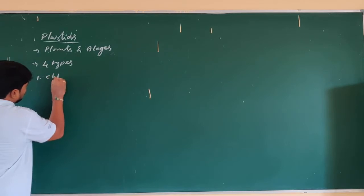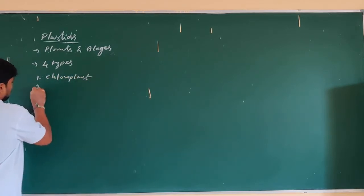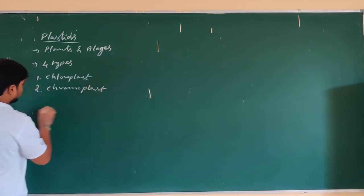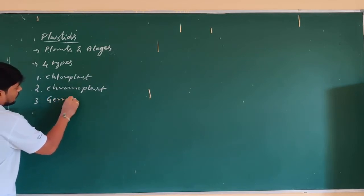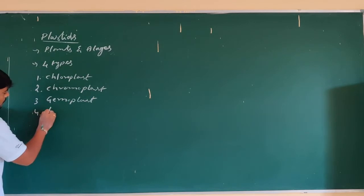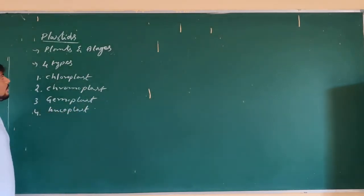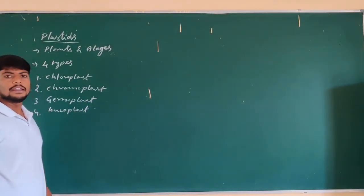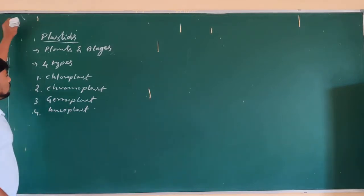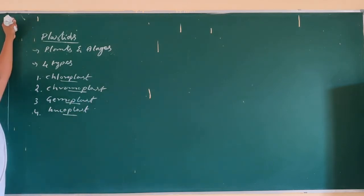The four types of plastids are: number one, chloroplast; number two, chromoplast; number three, gerontoplast; and number four, leucoplast. These are the different types of plastids usually found in plant cells. Now we are going to discuss these four types and their functions.